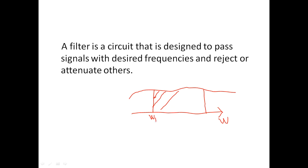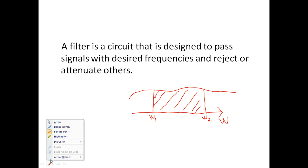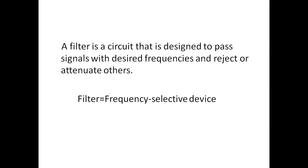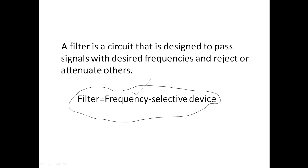If omega_1 and omega_2 are the boundary frequencies, the filter circuit will allow the signal for the omega_1 to omega_2 range and will reject the portions outside that range. So basically a filter is nothing but a frequency selective device — according to the frequency range it will allow some portion of the signal and reject other portions.